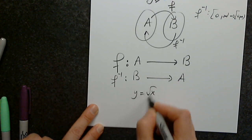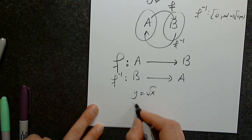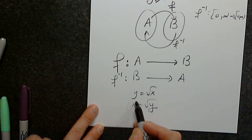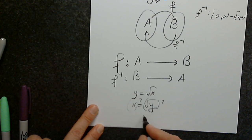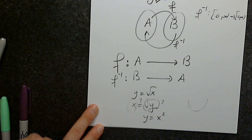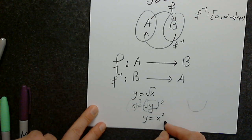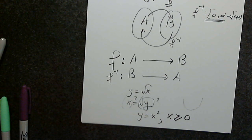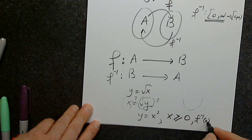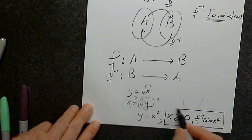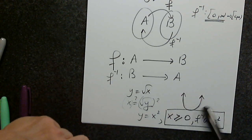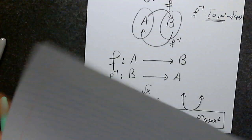So step 1: y = √x. Step 2: x = √y. Step 3: we square both sides, giving y = x². But y = x² is not a one-to-one function, so we must write x ≥ 0. The inverse function is x² but only when x ≥ 0 — because without that restriction, x² is not one-to-one, but that restricted piece is.